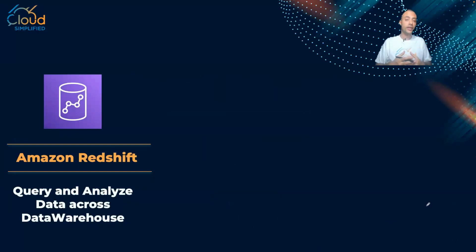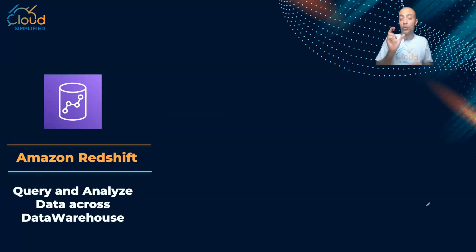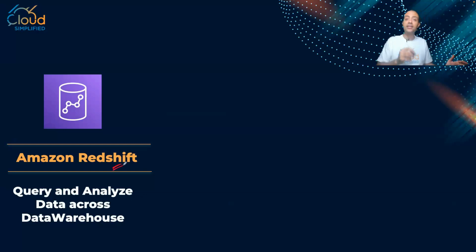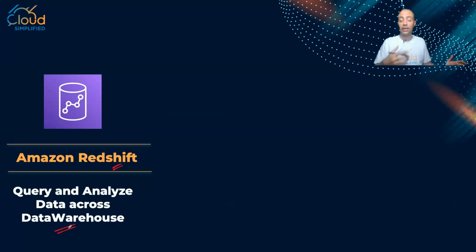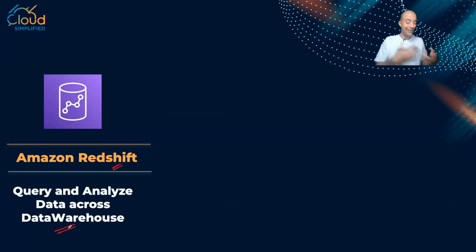Let's start with Amazon Redshift. This is very important for the exam — all you need to know is the name of the database and the keyword that helps you answer exam questions. For Amazon Redshift, it is the offering from AWS for data warehousing. Data warehousing is useful for data analytics. If you have a huge amount of data, maybe in exabytes or petabytes, and you need to query and analyze your database in a data warehousing fashion, here comes Amazon Redshift.